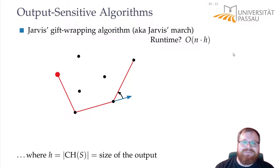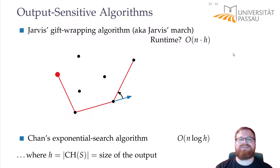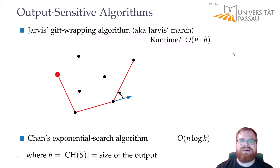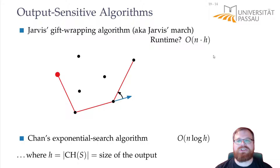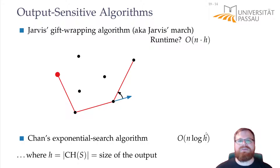Until Timothy Chan came and found another algorithm called Chan's exponential search algorithm, which only takes O(n log h) time. This is even smaller than Jarvis March. And this is really the best you can do — there is no way to get this running time any lower, not for fixed n and not for h.